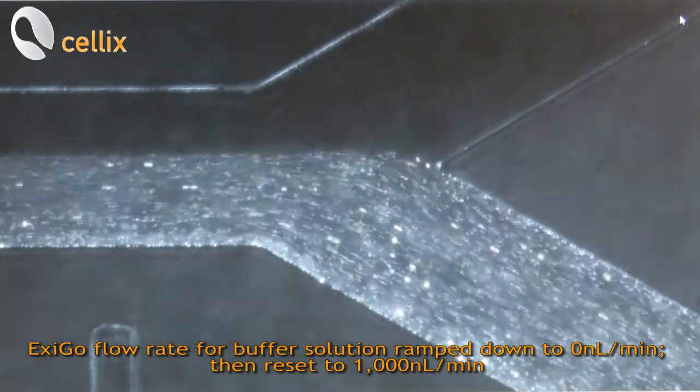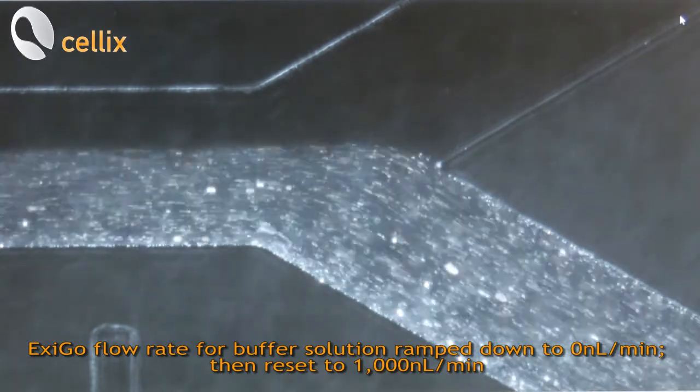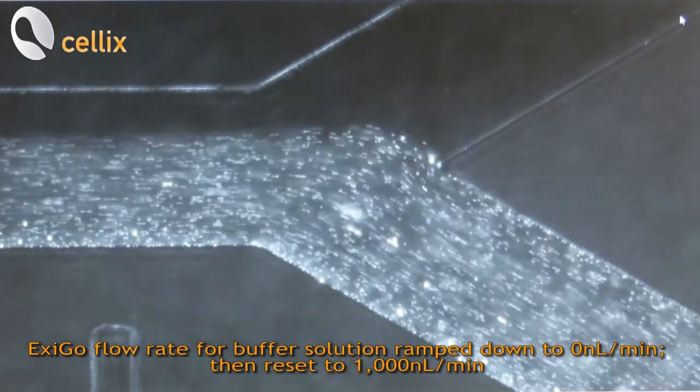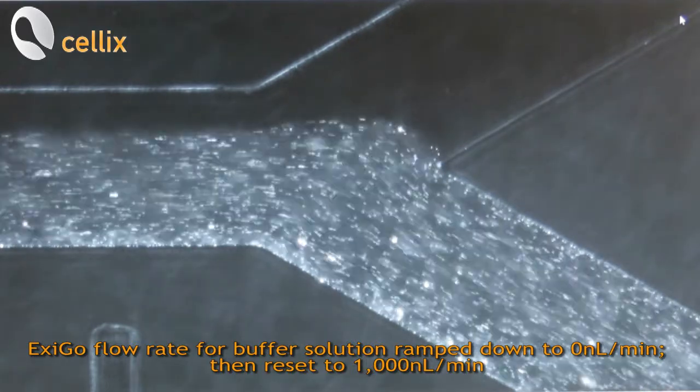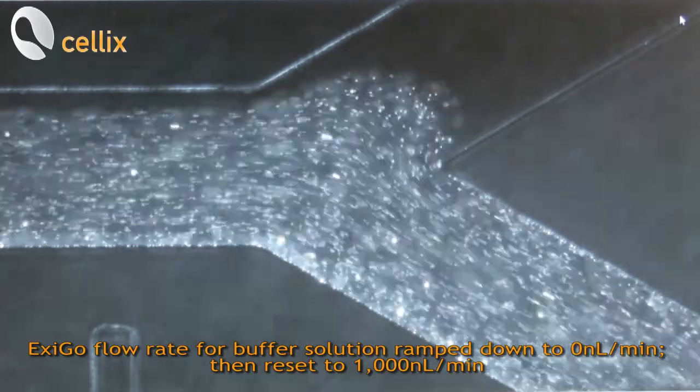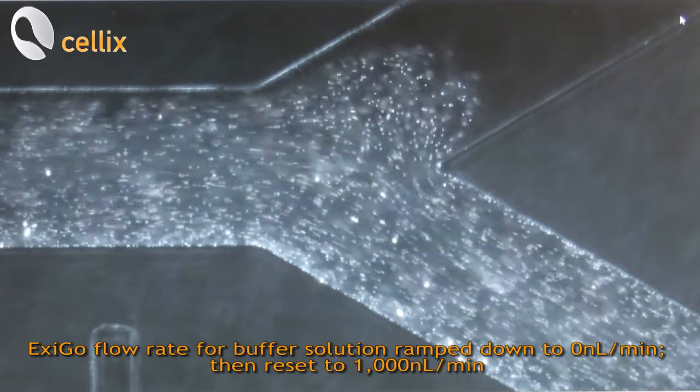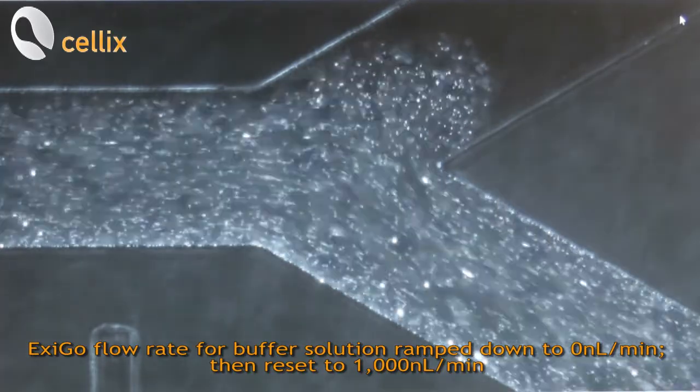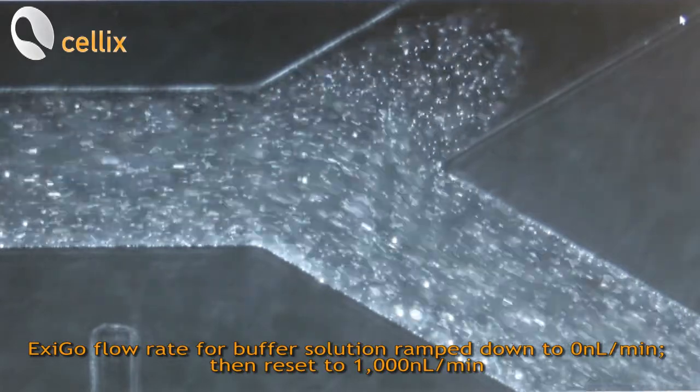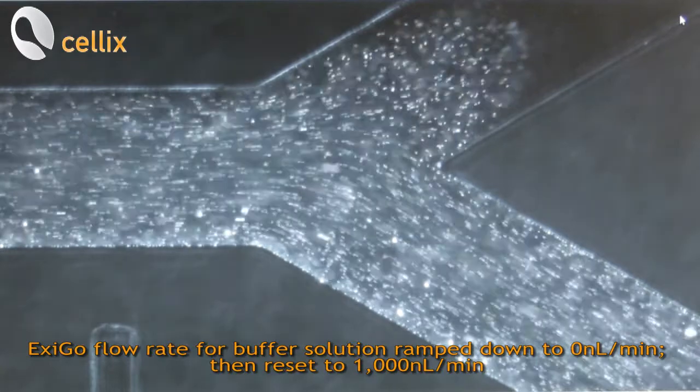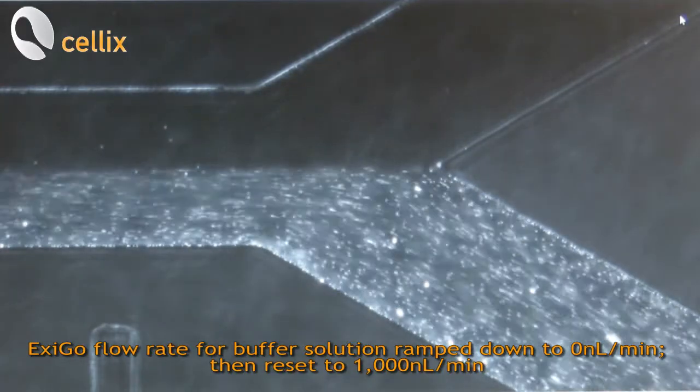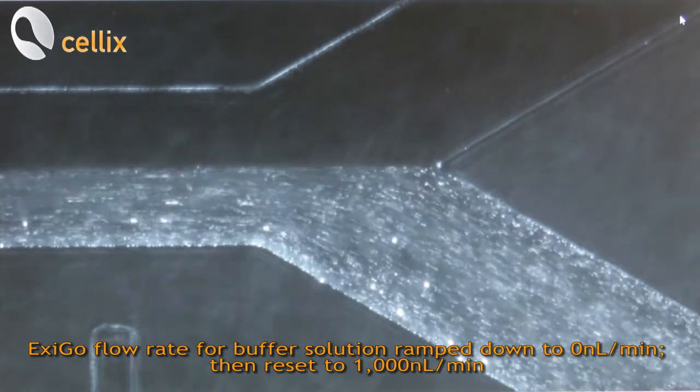As we can see now we are running the program so the interface is drifting towards one side because the buffer solution is actually reducing the flow rate. So the buffer solution now has a zero nanoliter per minute. So just particles are flowing into the channel. And now again the flow rate has been set to 1000.